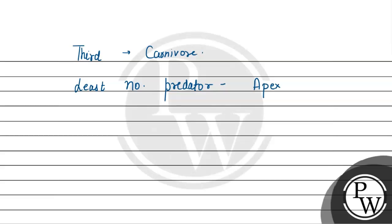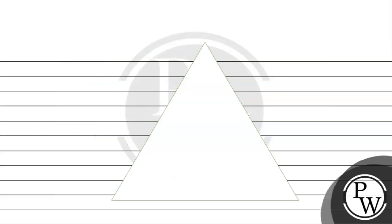So the grassland ecosystem or grassland pyramid is always in an upright position. That is always in an upright position, with the numbers decreasing toward the top.